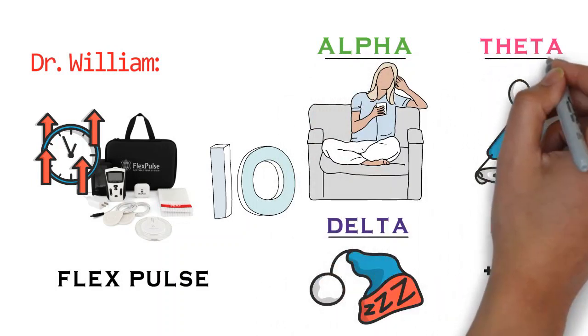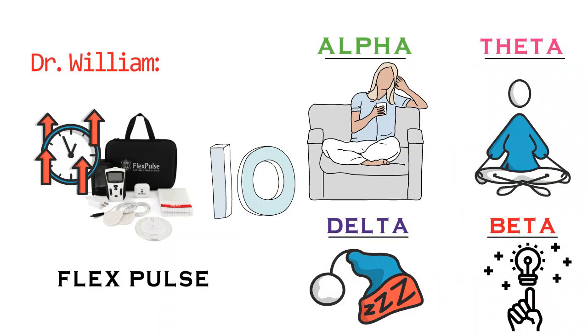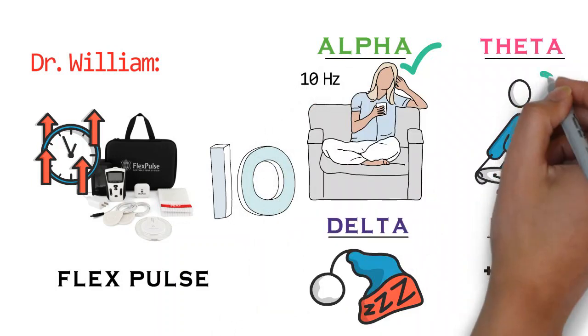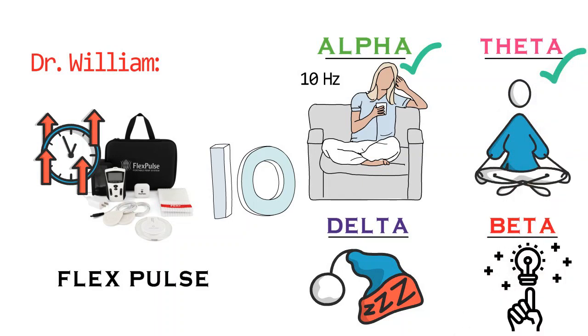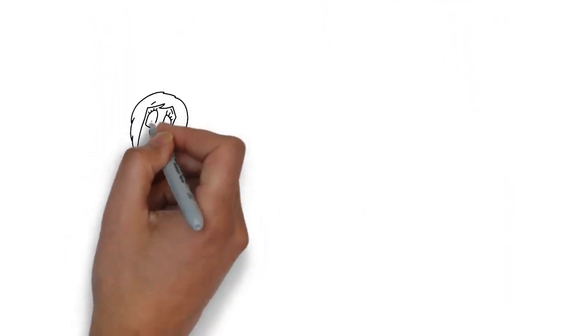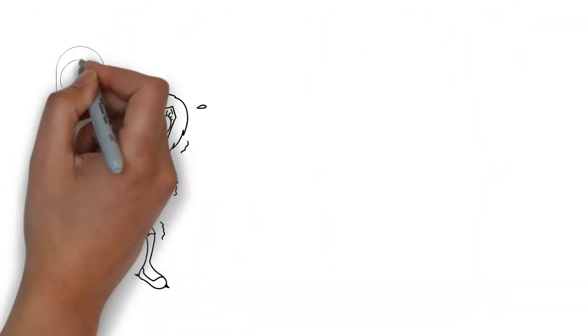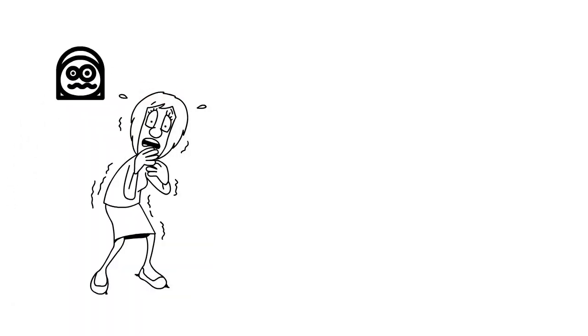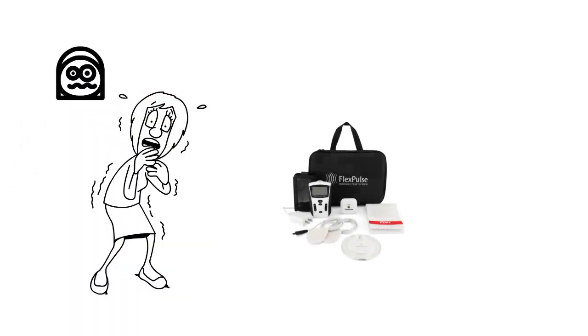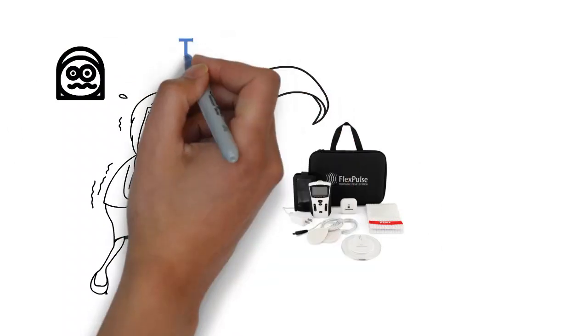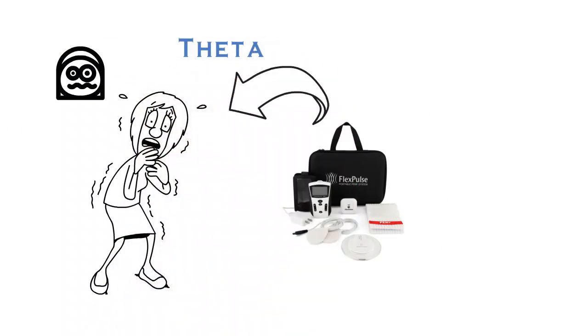For anxiety, the primary treatments are going to be to use either alpha, which is program one, 10 hertz, or to use program four, which is going to be theta, very relaxed. I had a patient come into the office who was extraordinarily anxious. She was fidgeting and nervous. She had to start walking, had to pace in the office. She was so agitated and anxious and nervous. I put the FlexPulse, one coil, on the back of her neck using theta, the theta frequency.